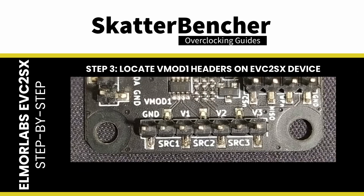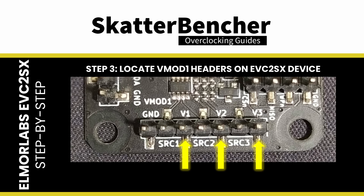Step 3: find the headers near the VMOD1 marking on the EVC2SX PCB. On the EVC2SX, there are seven pins: one for ground, and three sets of two pins for a specific voltage controller. The two pins in each set have two purposes — one pin is used for voltage measurement, and the other pin is used for voltage adjustments. Starting from the ground pin on the left, every other pin is for voltage measurement, and the pins in between are for voltage adjustments.